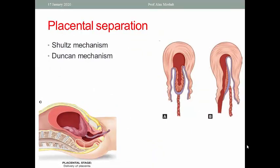Regarding physiological placental separation, we have two mechanisms. Scholt's mechanism is the most common, occurring in more than 80% of cases. In Scholt's method, separation of the placenta occurs at the center and the placenta is delivered like an inverted umbrella. This mechanism has a lower incidence of hemorrhage and retained remnants of the placenta.